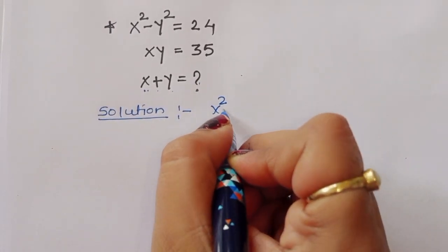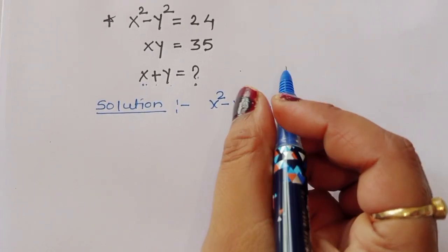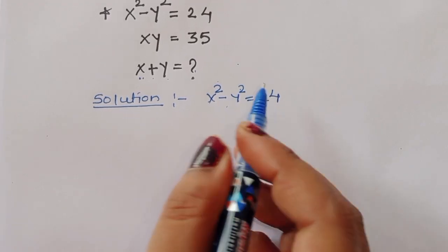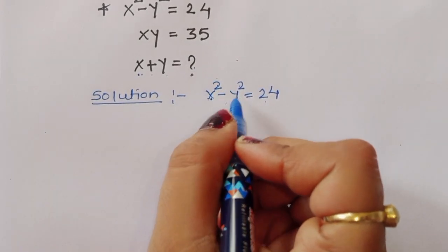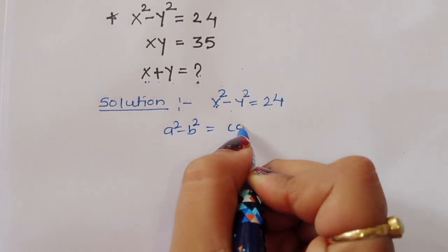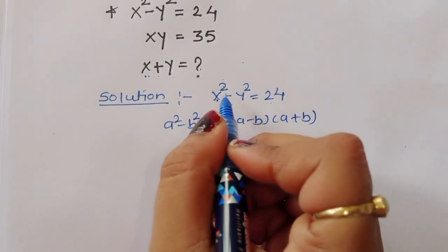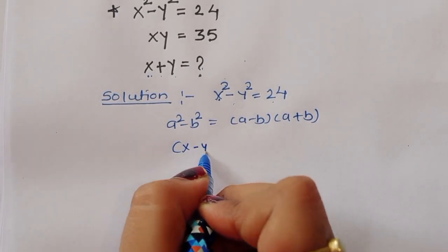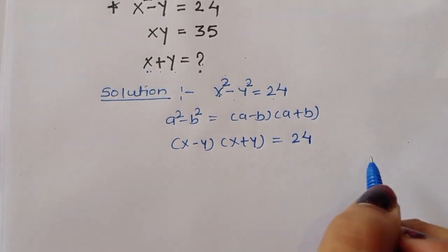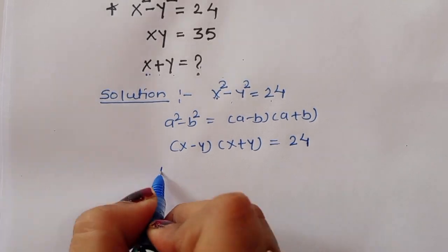The given equation is x squared minus y squared is equal to 24. We can use the formula a squared minus b squared is equal to a minus b times a plus b. Using this formula, we can write x minus y times x plus y is equal to 24.